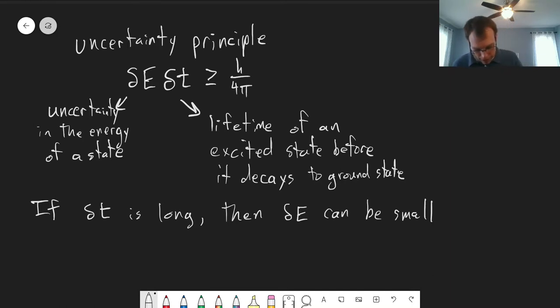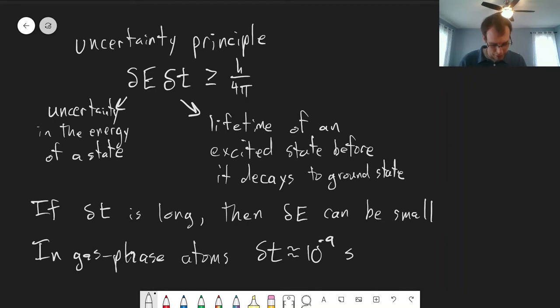So for gaseous atoms and gas phase atoms, the lifetimes are usually on the order of nanoseconds. So delta T is approximately equal to 10 to the minus 9 seconds. So let's go ahead and see what that corresponds to in terms of our delta E values.